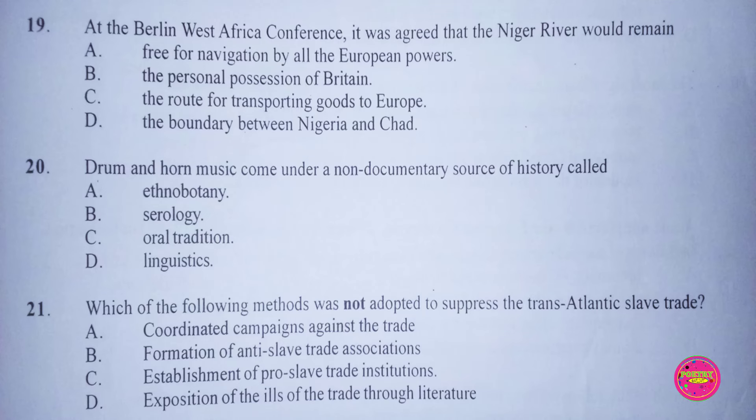Question 21. Which of the following methods was not adopted to suppress the transatlantic slave trade? A. Coordinated campaigns against the trade, B. Formation of anti-slave trade associations, C. Establishment of pro-slave trade institutions, D. Exposition of the ills of the trade through literature. The correct answer to this question is C. Establishment of pro-slave trade institutions.